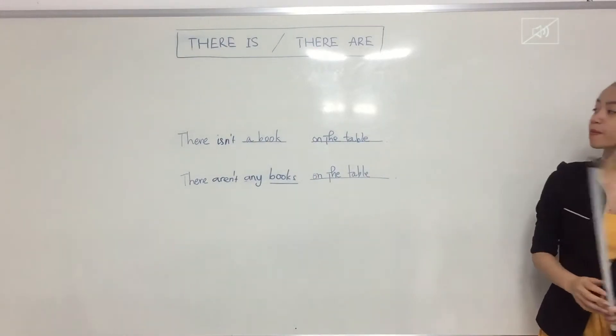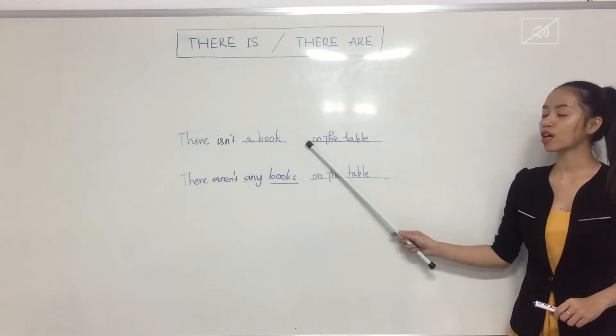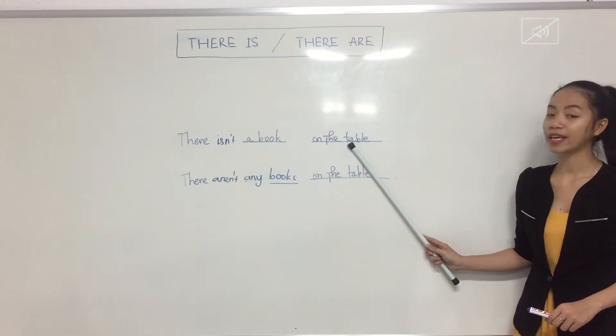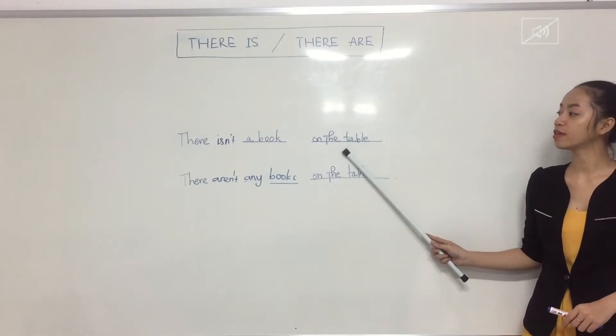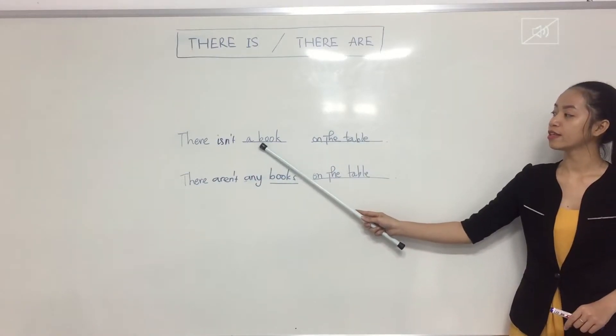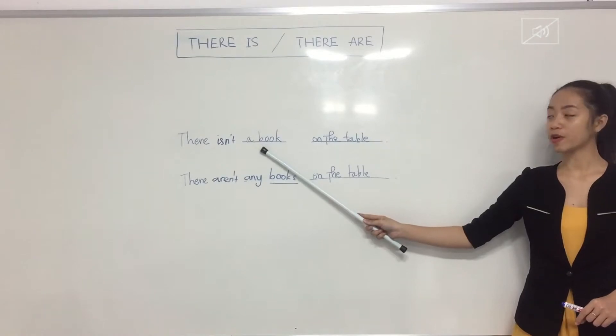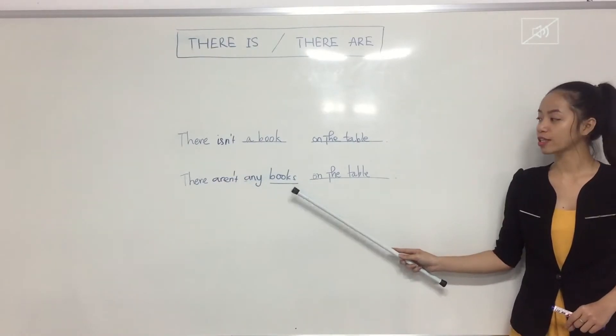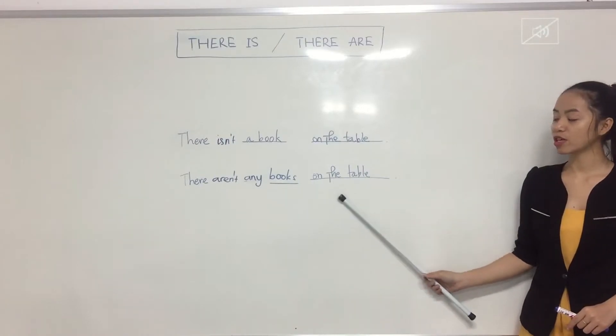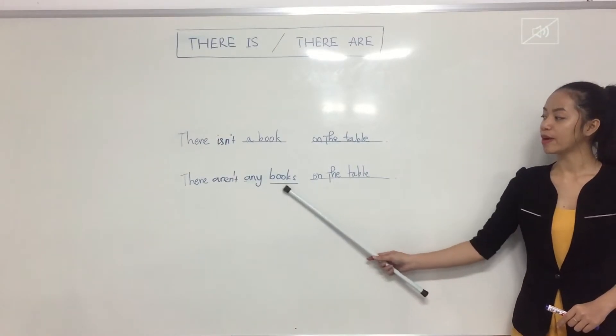So please repeat after me. There isn't a book on the table. Again, there isn't a pencil on the table. A pen. A ruler. A rubber. There aren't any books. There aren't any books on the table. Pencils, pens, rubbers.